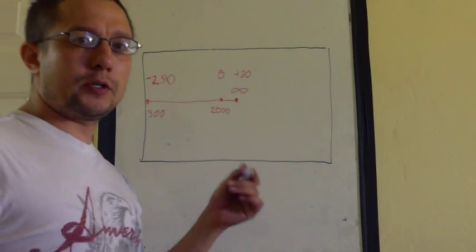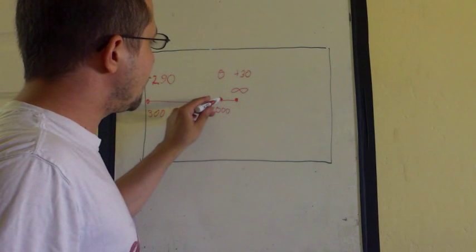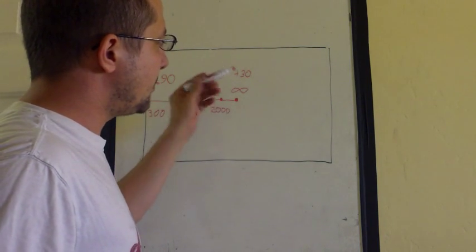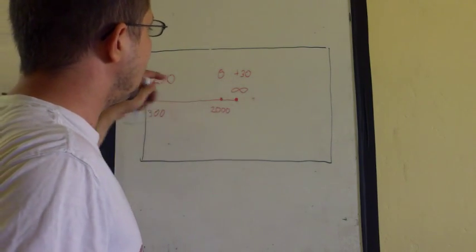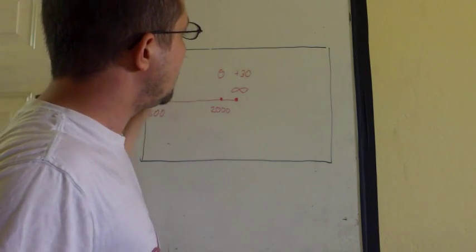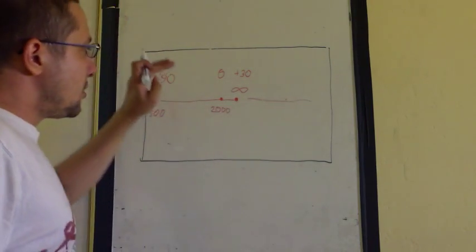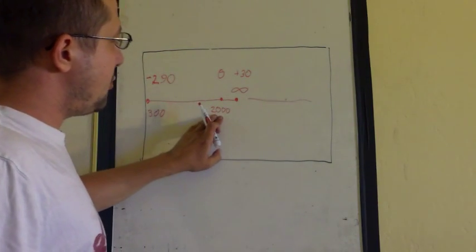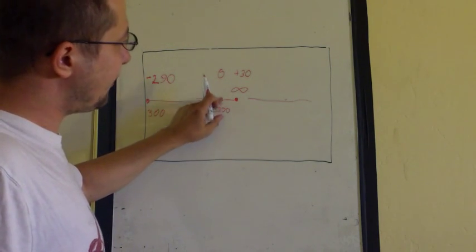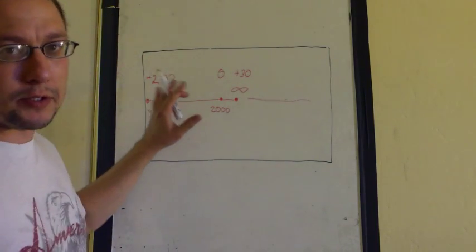I also put hard limits in the code to not allow this point to go beyond. If OpenCV finds a spot here, it does not belong to this point. It probably belongs to somewhere on the grid, to a different point that travels from here to here. So if we calibrate at 2000, we know that point can travel probably plus 30 pixels to the right and minus 290 to the left.